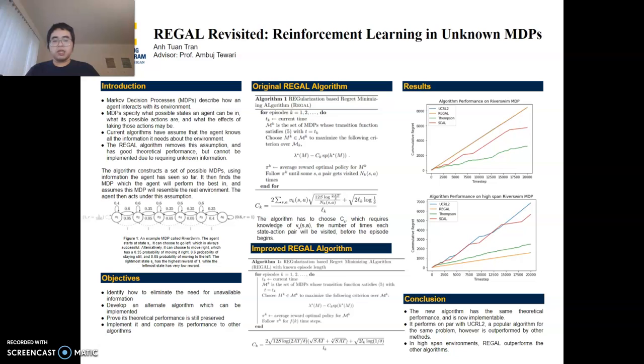Therefore, to eliminate this restriction, I made modifications to the original REGAL algorithm so that now the agent does not need information from the future. It only needs information which it already had before it starts to plan and act. How this is done is mostly mathematical, which I will not go into here.